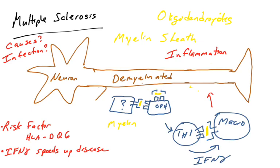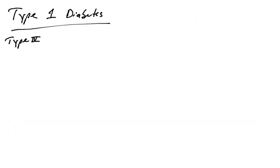What are the causes of MS? We have genetic risk factors. There could also be some molecular mimicry — there are some infections that might trigger an immune response that overlaps with myelin and oligodendrocytes, though this is not fully clear. Another risk factor is environmental and non-infectious, such as physical trauma. There is evidence that individuals who suffer from brain injuries or concussions have higher rates of MS. Tissue damage and inflammation can trigger an immune response, and the immune system — thinking it's fighting a pathogen or clearing damaged cells — ends up attacking healthy oligodendrocytes.